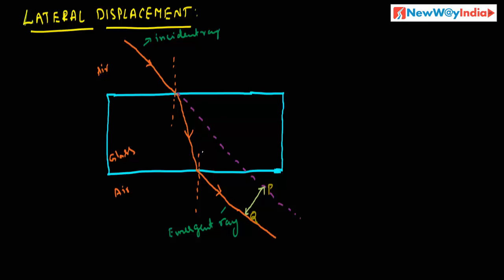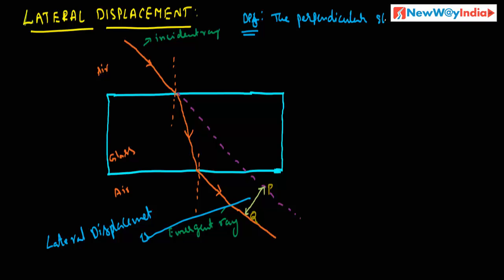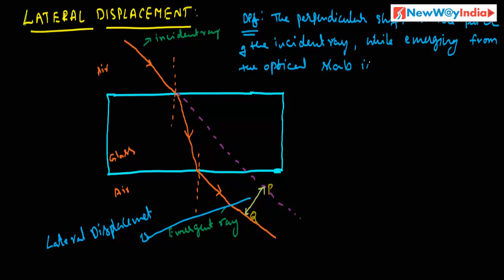The incident ray is emerging from the glass slab, and some displacement is observed from the extension of the incident ray. This displacement is called lateral displacement, also referred to as lateral shift. The perpendicular shift in the path of the incident ray while emerging from the optical slab is called lateral displacement. It is represented by PQ.